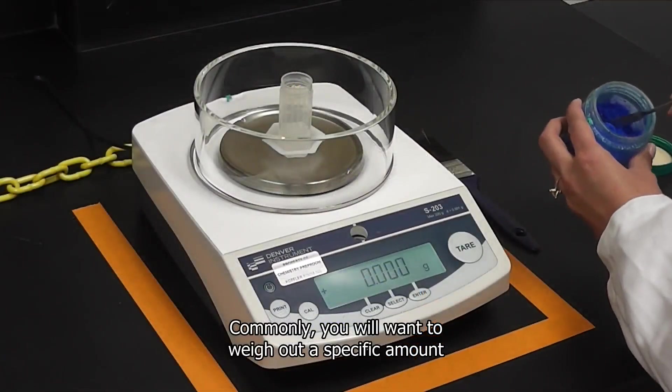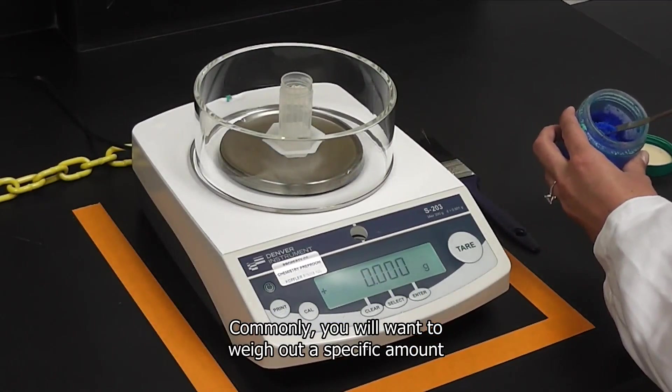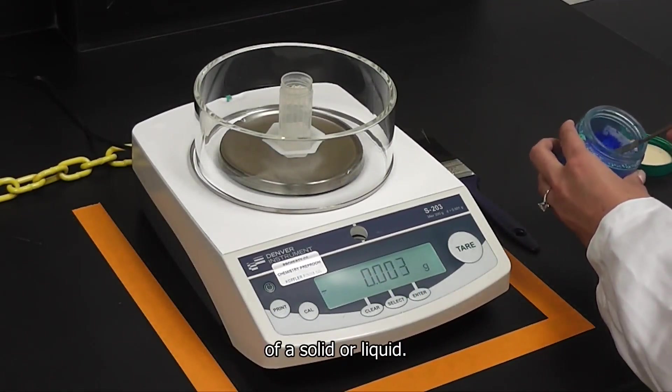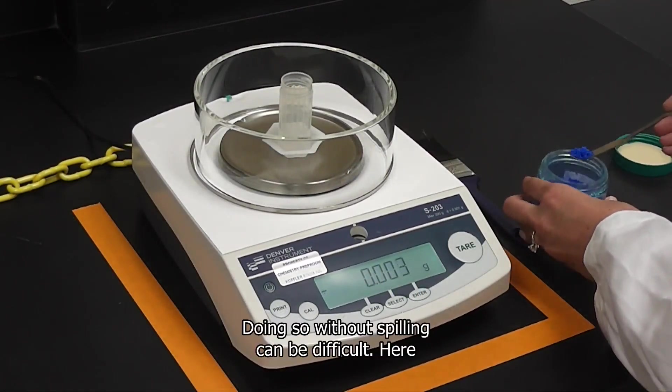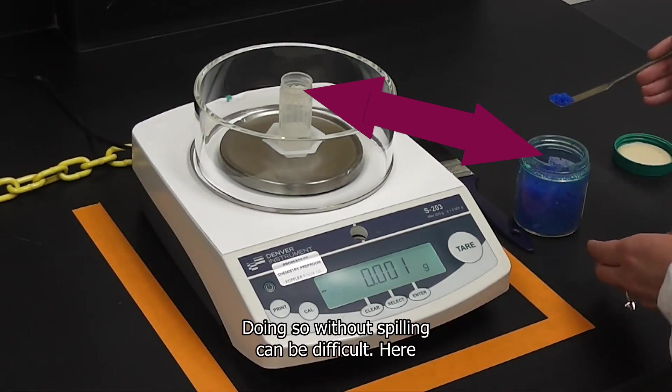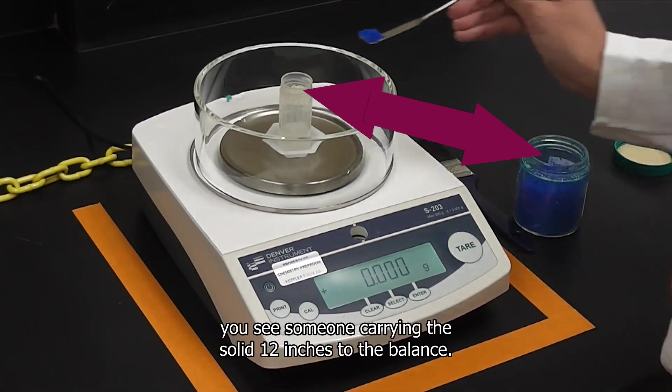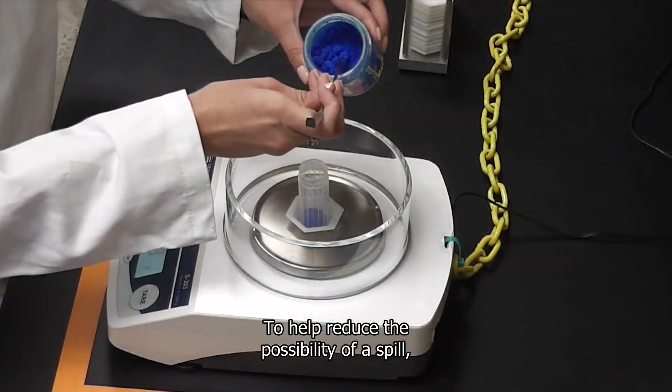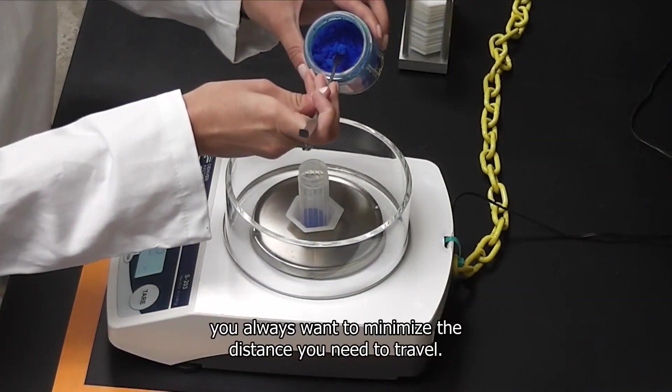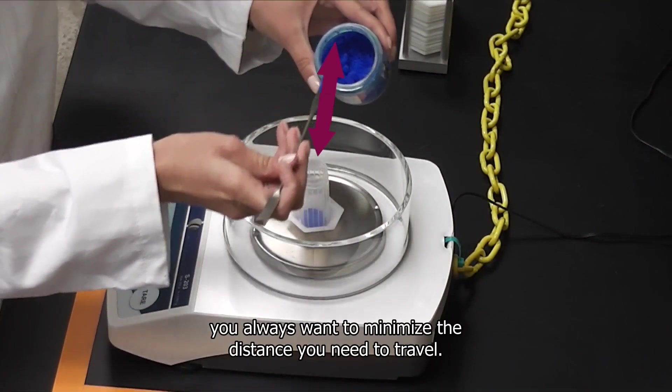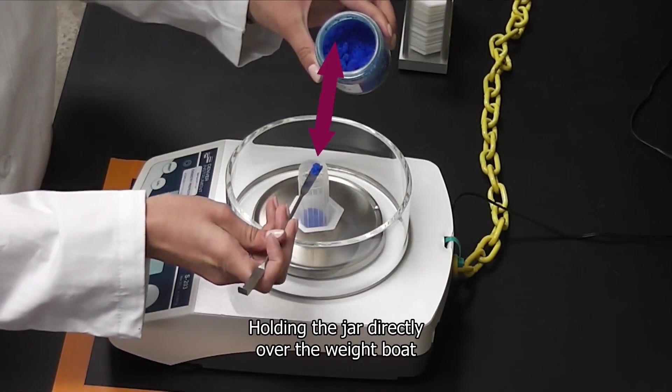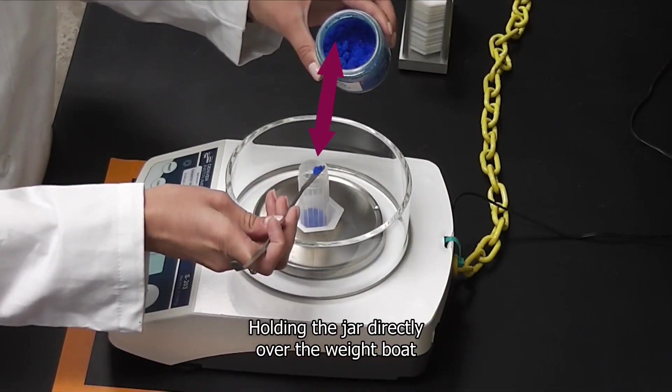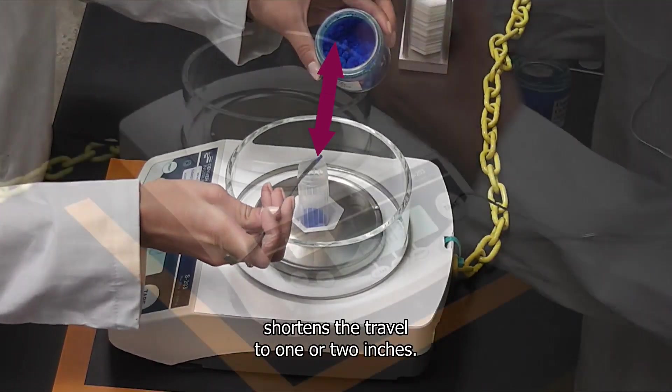Commonly, you will want to weigh out a specific amount of a solid or liquid. Doing so without spilling can be difficult. Here you see someone carrying the solid 12 inches to the balance. To help reduce the possibility of a spill, you always want to minimize the distance you need to travel. Holding the jar directly over the weigh boat shortens the travel to 1 or 2 inches.